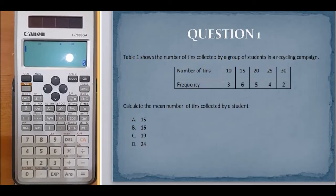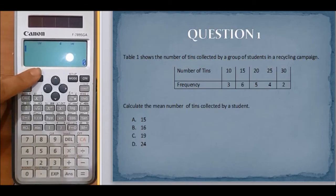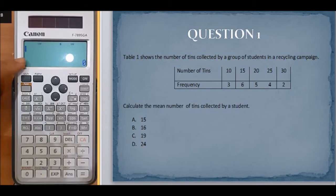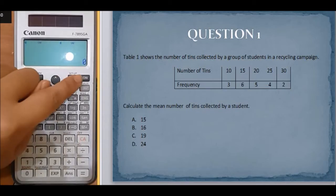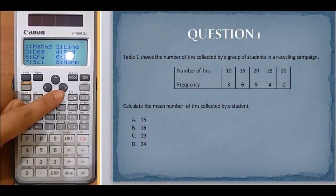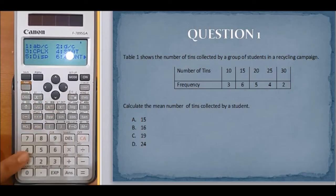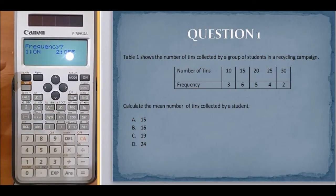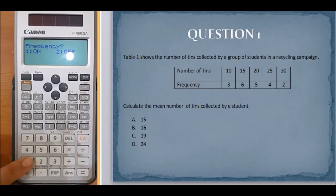So we have to turn on the frequency before we start to key in our values. Shift, mode, down arrow, number four, step frequency, one on, two off. Turn it on.